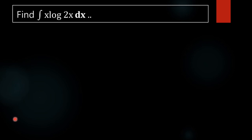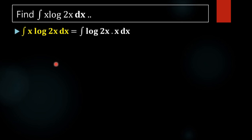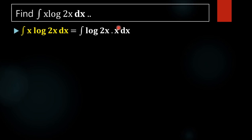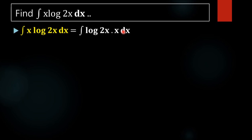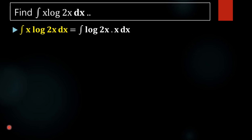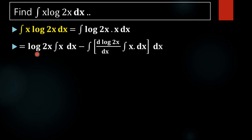For that, first take log(2x) as our first function and x as our second function. By using ILATE, we know that log is our first function and the algebraic function, that means x, is the second function. Next we have to integrate this using integration by parts.